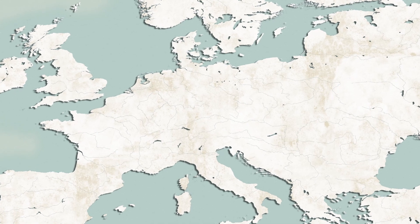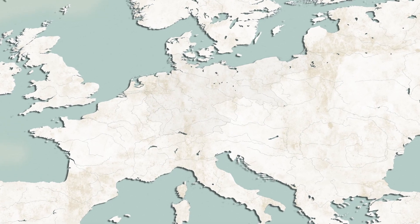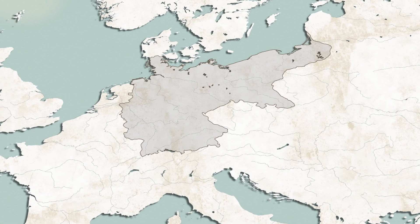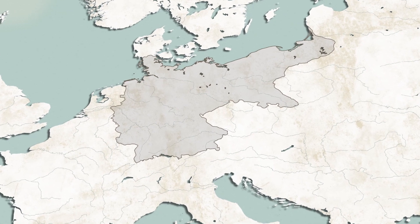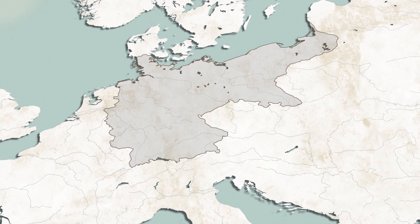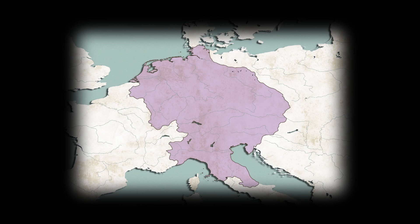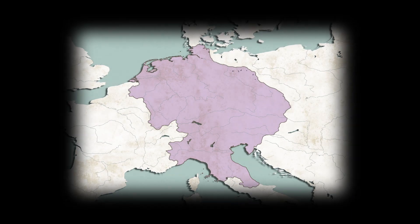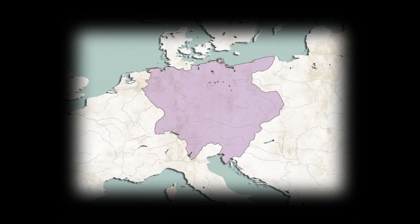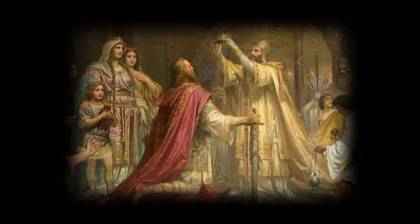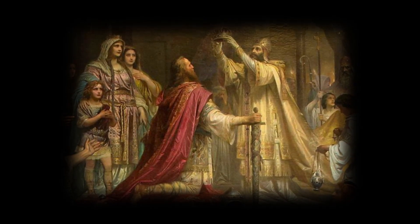The German Empire would be officially unified in 1871, but its roots can be traced back for over a thousand years, dating to the foundation of the Holy Roman Empire in the 9th century. But by the 18th century, the Holy Roman Empire's influence had significantly diminished, both politically and militarily.